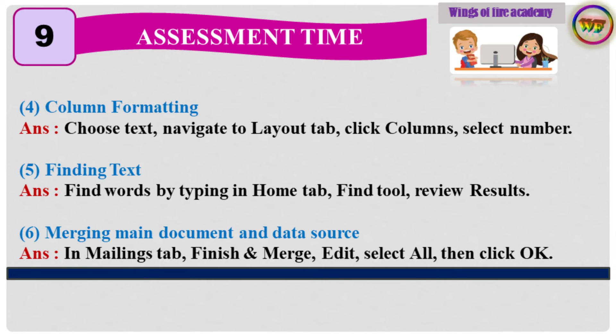5. Finding Text. Answer: Find words by typing in the Home tab Find tool, then review results. 6. Merging main document and data source. Answer: In the Mailings tab, click Finish and Merge, then Edit, Select All, and click OK.